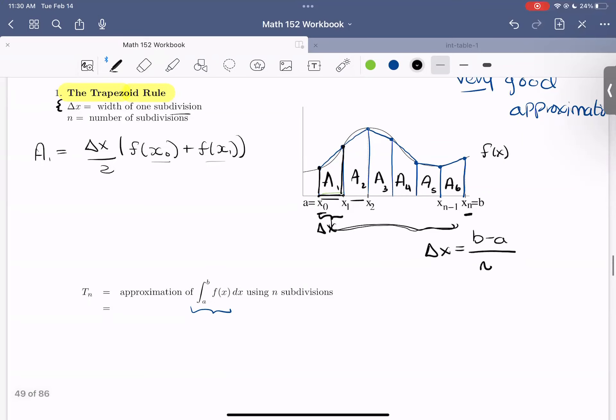So then we can continue doing this. So A sub two would look like width delta X times F of X sub one plus F of X sub two over two.